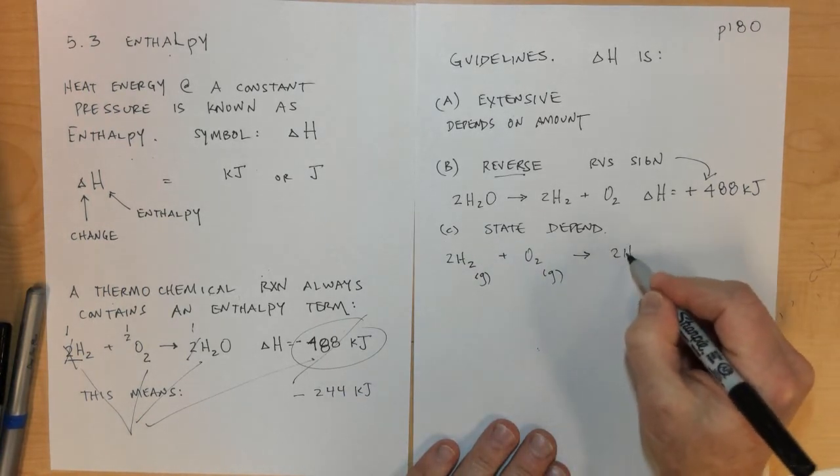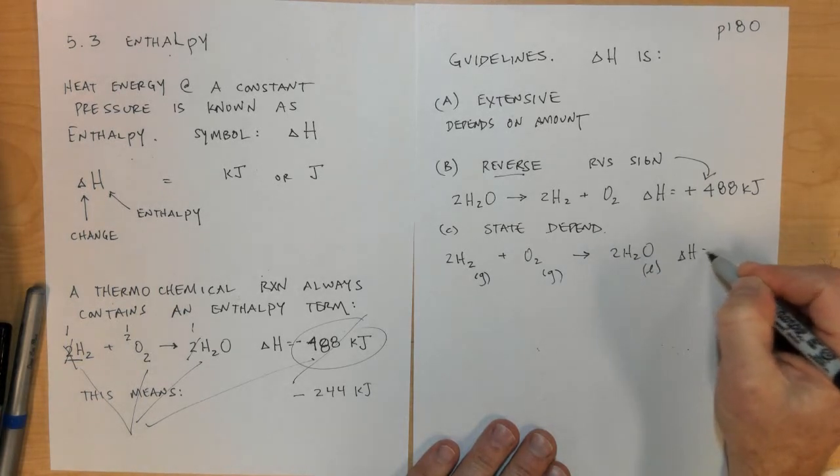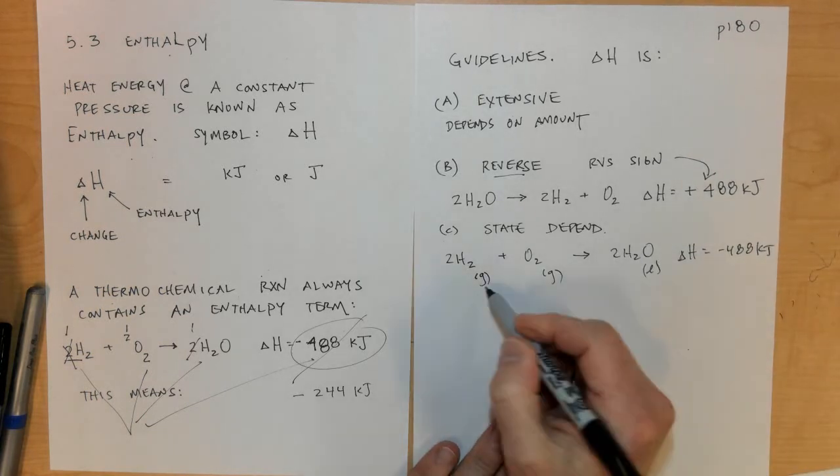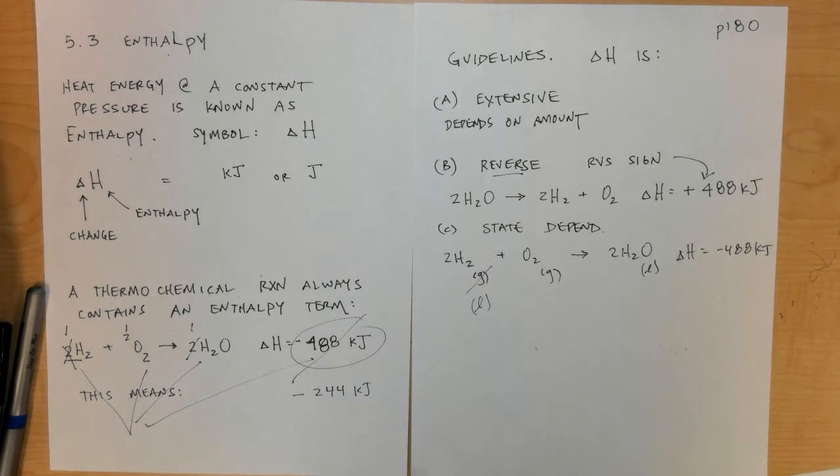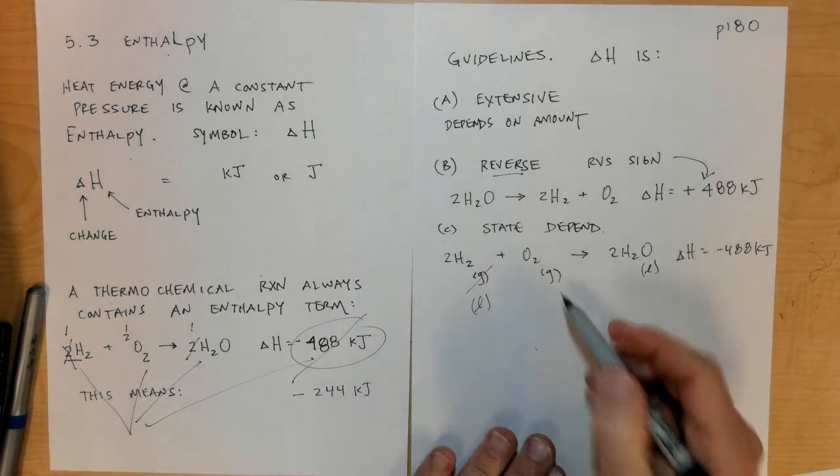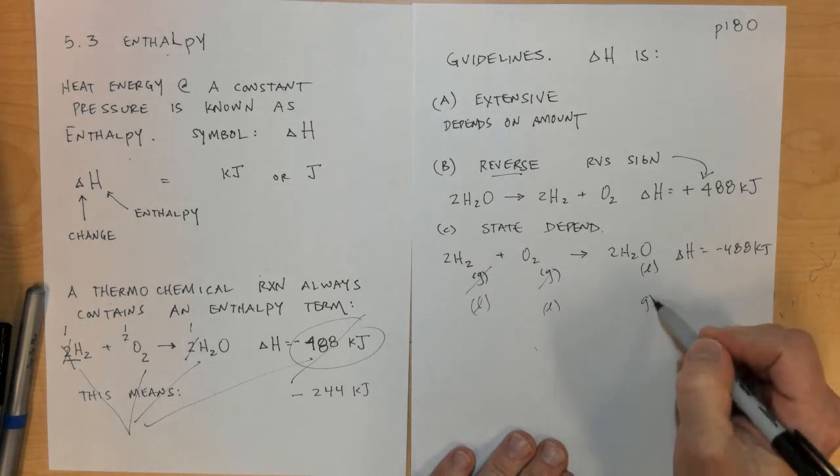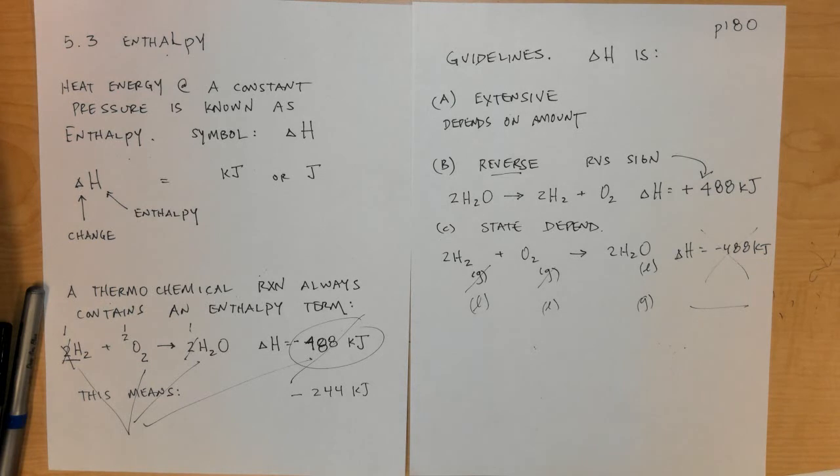If hydrogen were in its liquid state around 2 Kelvin and oxygen were in its liquid state and water were in its gaseous state, the enthalpy would be completely different because the state of the substance would be different.